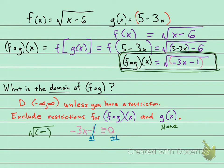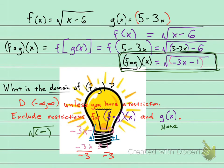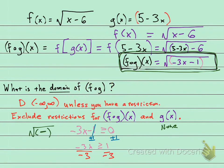So negative 3x is greater than or equal to zero plus one, which is one. And one more step to get my x by itself: I am going to divide by a negative. When you divide by a negative, when you divide an inequality by a negative, you have to flip over the inequality.